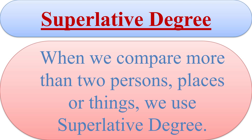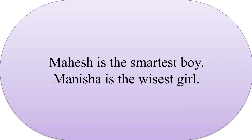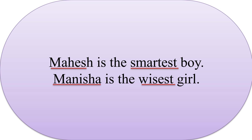Third is Superlative degree. When we compare more than two persons, places or things, we use Superlative degree. For example: 'Mahesh is the smartest boy' and 'Manisha is the wisest girl.' In the first sentence, 'smartest' describes Mahesh as smartest not just among one or two boys, but among all. In the second sentence, 'wisest' is used to compare Manisha with all the girls. So, they are in Superlative degree.